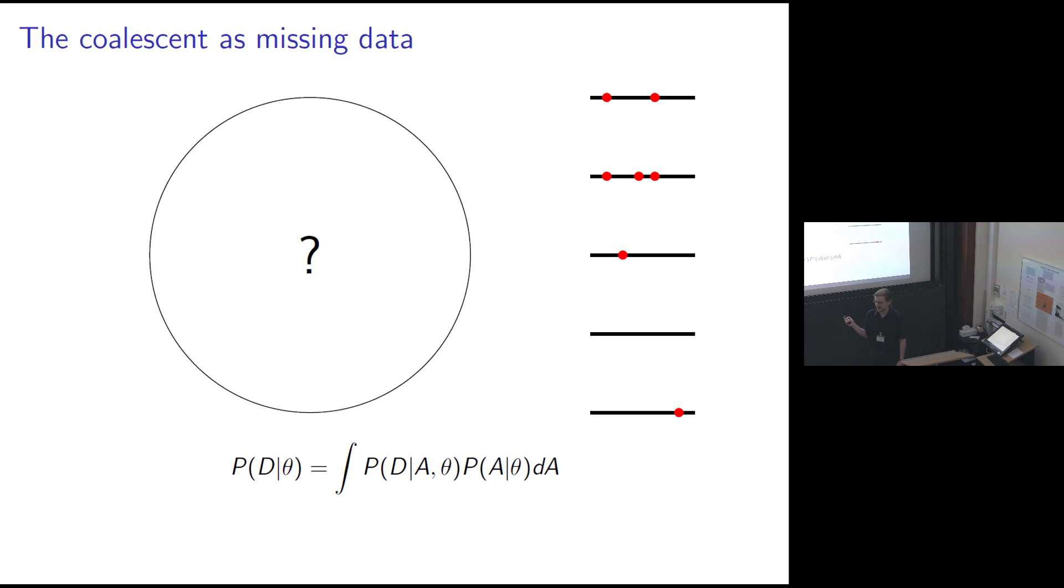Now the set of all possible ancestral trees for a given dataset is this large high-dimensional combinatorial object, so you won't be surprised to hear that this integral cannot be evaluated analytically in any setting of practical interest. Instead you're forced to resort to some sort of numerical methods, and even then more or less the only thing that has a hope of working for any samples larger than, say, about 50 sequences, you're looking at some kind of Monte Carlo method, doing some kind of simulation, sampling of trees, and using an empirical ensemble of pseudorandom trees to approximate the value of this integral. So that's what we're going to do.